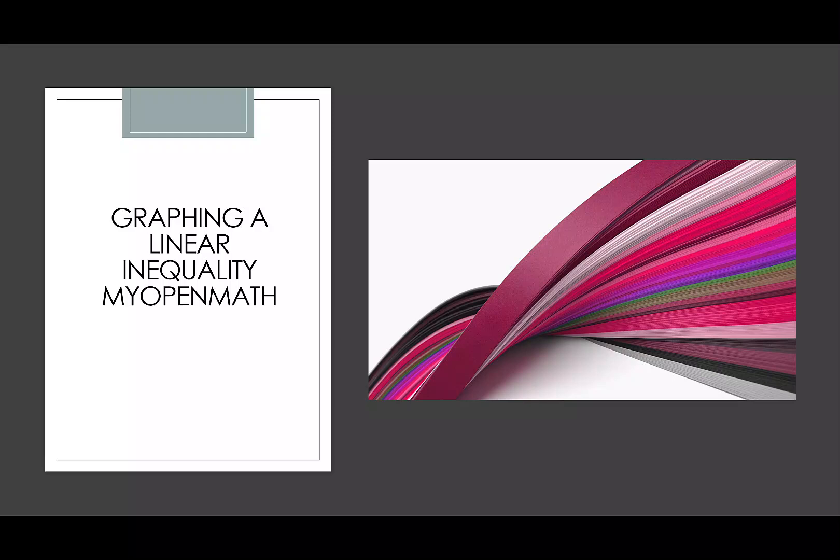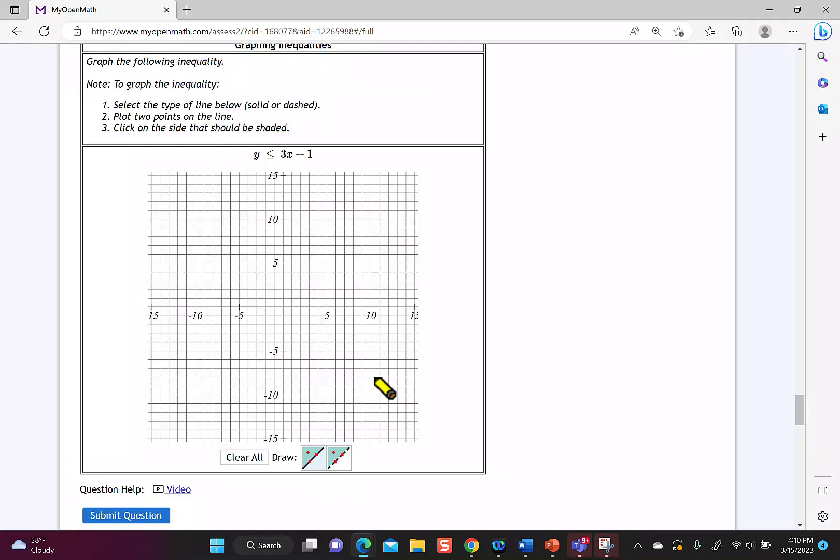Let's look at graphing a linear inequality in MyOpenMath. Remember to start by deciding if you should use a dashed line or a solid line in your graph. Because we have y is less than or equal to 3x plus 1, I'm going to pick a solid line.